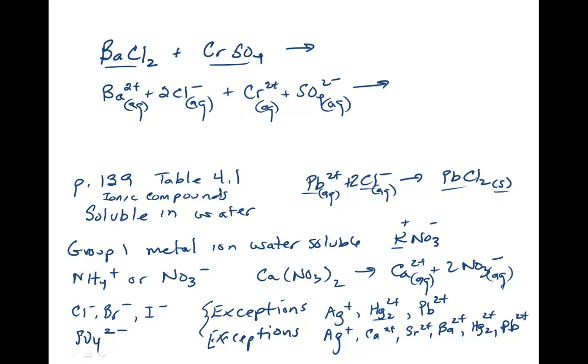Alright so what are my products that are going to be formed? Well the barium ion is not going to react with the chromium ion because like charges repel each other. So if barium is going to form something new, it's going to be this compound, barium sulfate. And you know barium is a 2+ ion and sulfate is a negative 2 ion, so they would combine one to one.